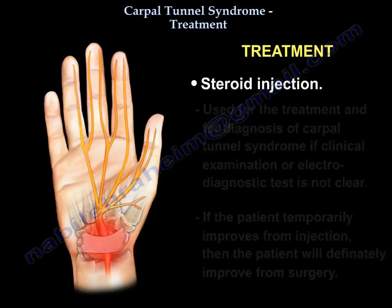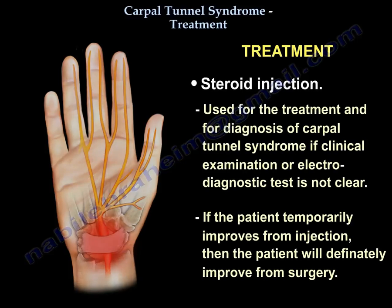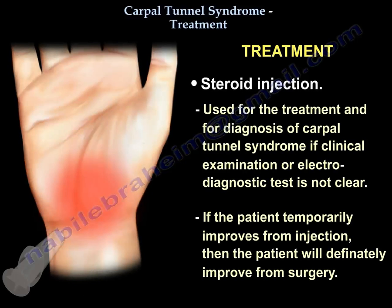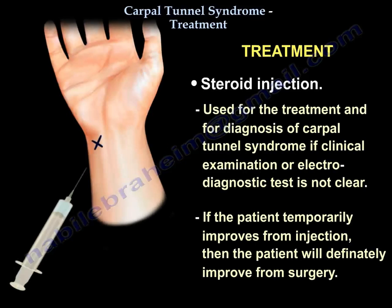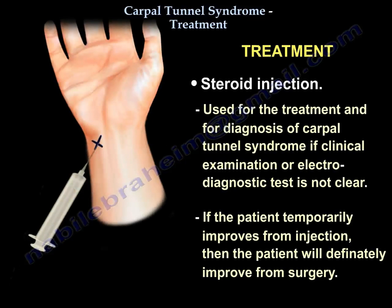A steroid injection is used for the treatment and for the diagnosis of Carpal Tunnel Syndrome if clinical examination or electrodiagnostic test is not clear. If the patient temporarily improves from injection, then the patient will definitely improve from surgery.